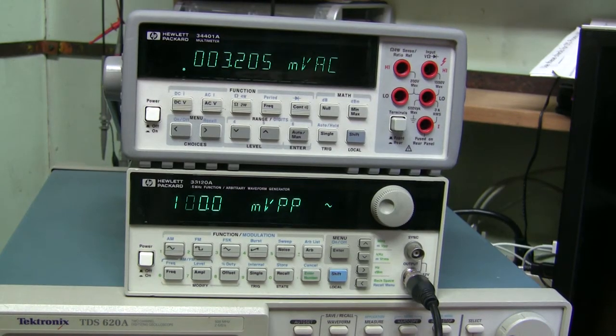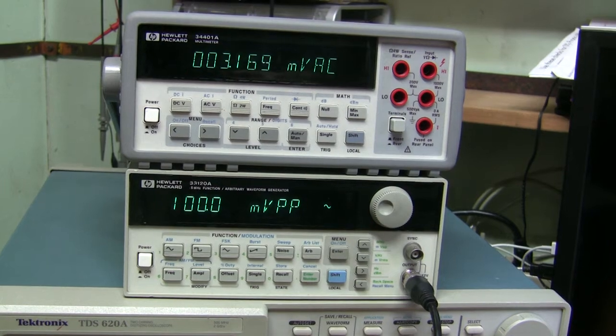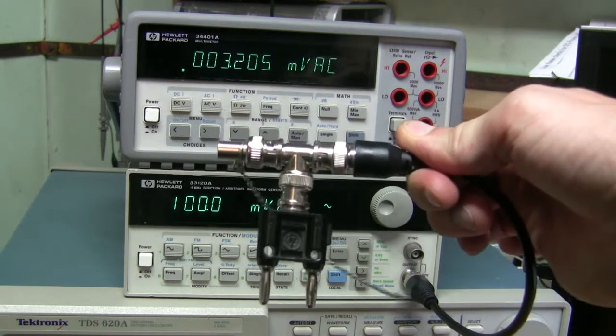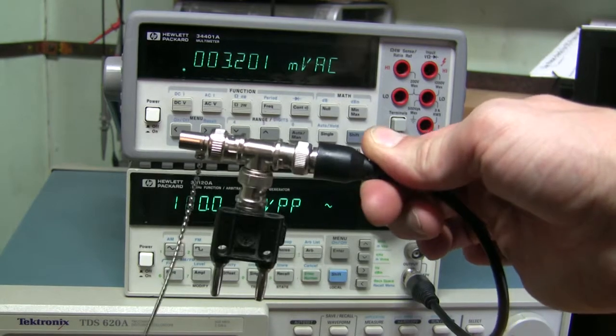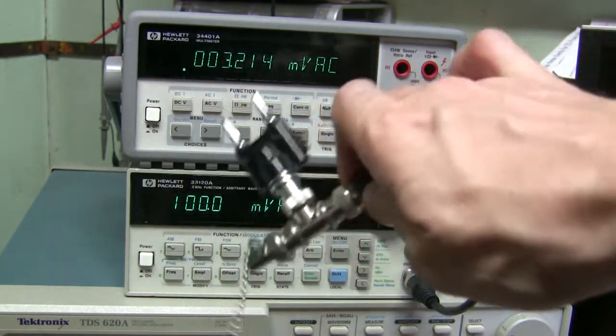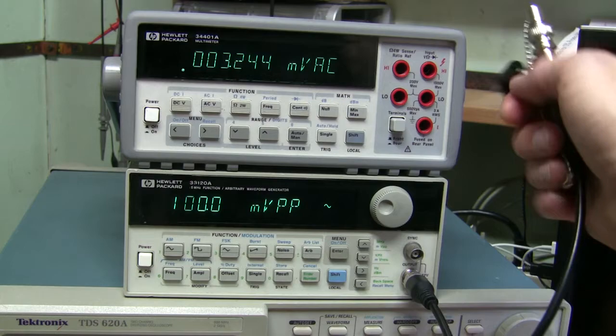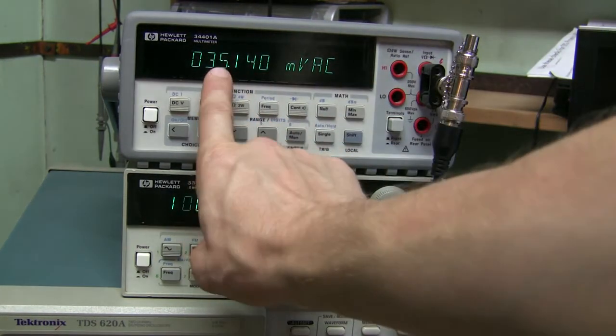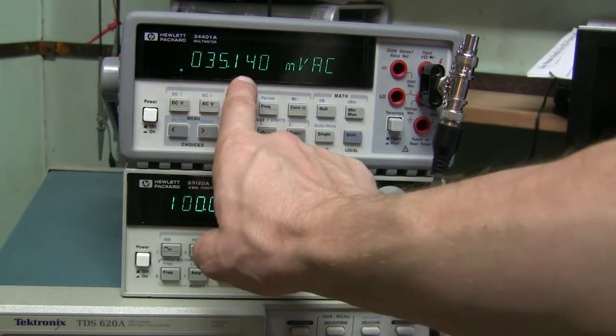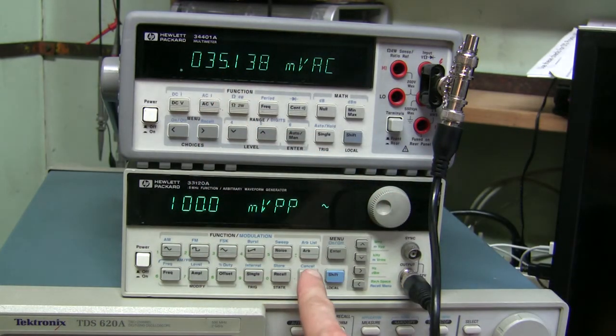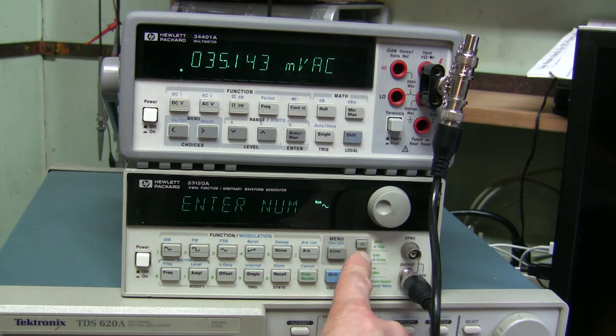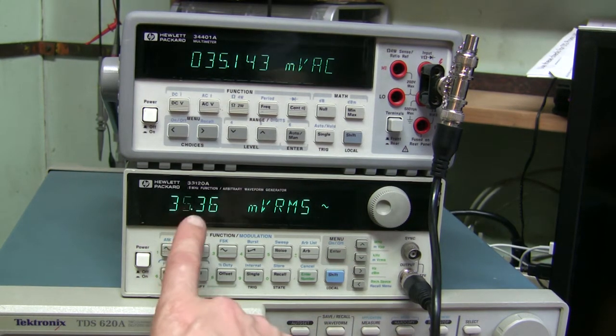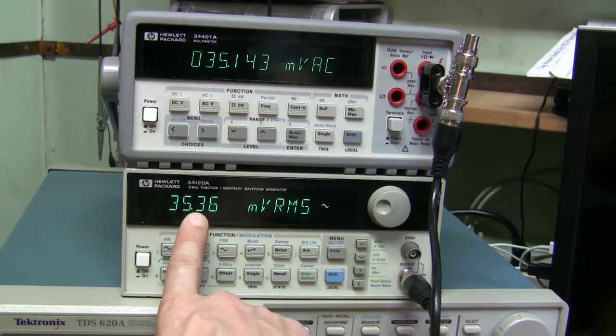All right, here we have very accurate six and a half digit multimeter. The output is terminated into 50 ohms and converted to bananas. Let's plug this in. And this guy is measuring RMS, so let's switch this to RMS as well.